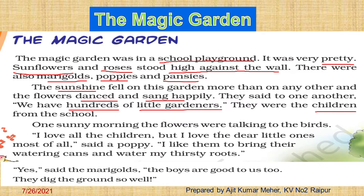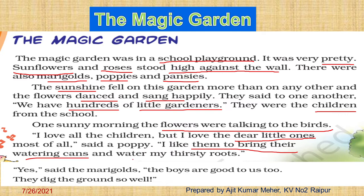One sunny morning, the flowers were talking to the birds. As it is a magic garden, everyone could speak there — the flowers, the birds, the trees, all can speak there. A poppy said, 'I love all the children, but I love the dear little ones most of all. I like them to bring their watering cans and water my thirsty roots.' That's why the poppy loved the children very much.